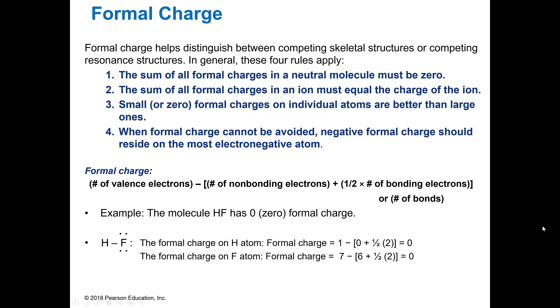When we're using formal charges, we want all of the formal charges must be zero. So if you add them together and they don't equal zero, then go back and check because you probably made an error. The sum of all of them must be equal to the charge of the ion if it's an ion. So if it's a plus one, when you add them all together, they should equal plus one.